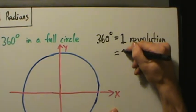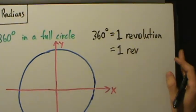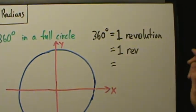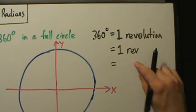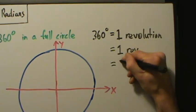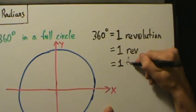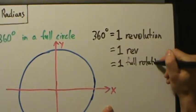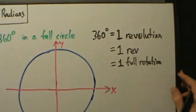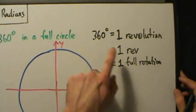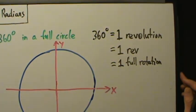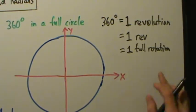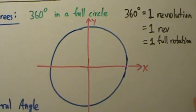So 360 degrees is one revolution, abbreviated REV (R-E-V). It's not a super common unit but it shows up enough to be worth mentioning. You could also call it one full rotation, or just a rotation. These units show up every now and then, so it's worth pointing out.